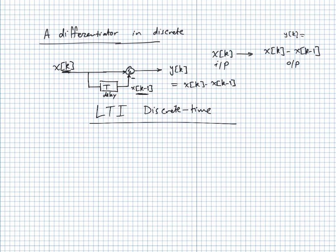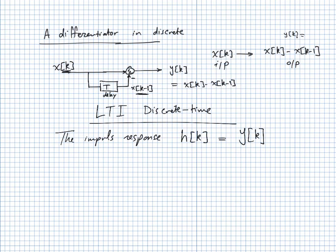For LTI discrete time systems, the impulse response h(k) is defined as the output of the system when the input is a discrete delta function. To find the impulse response from the input-output relation, substitute the input with a discrete delta; whatever you get for y is h(k). This is exactly analogous to the continuous time case.